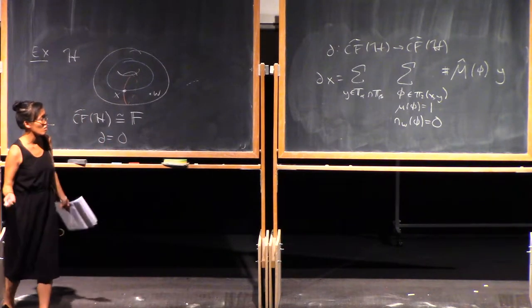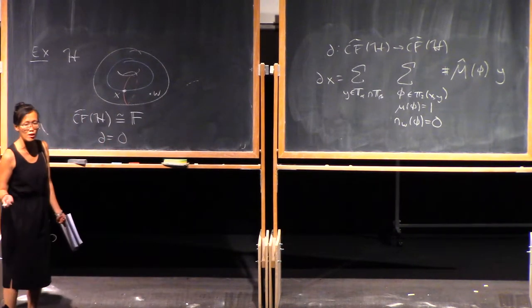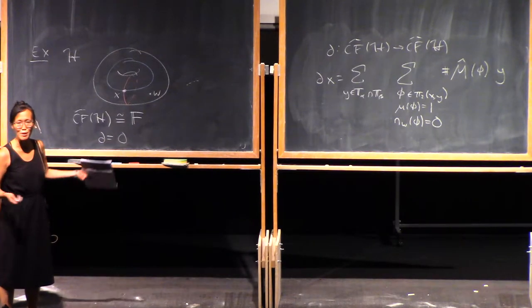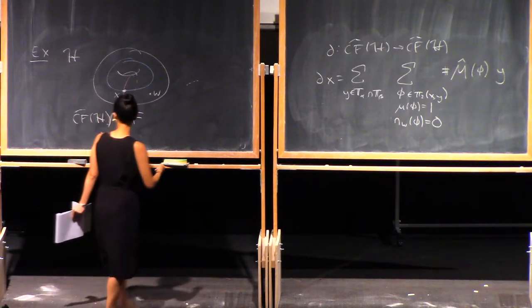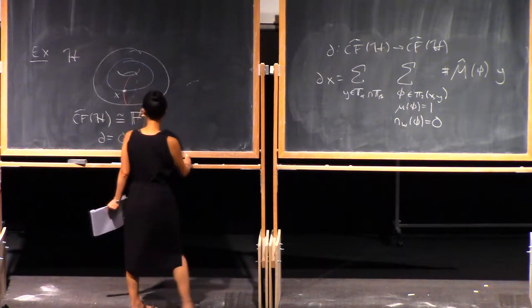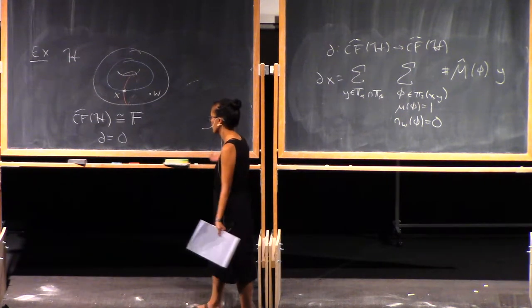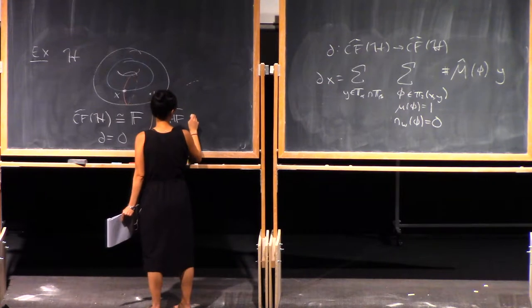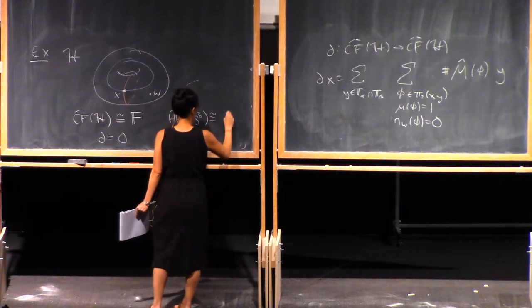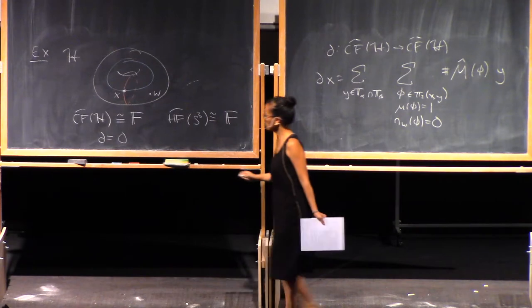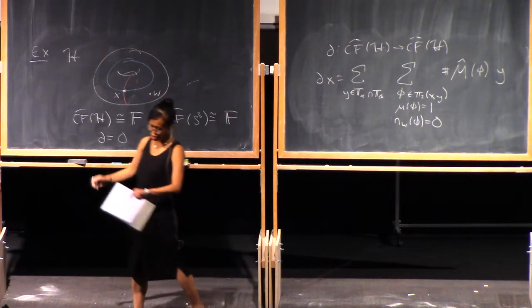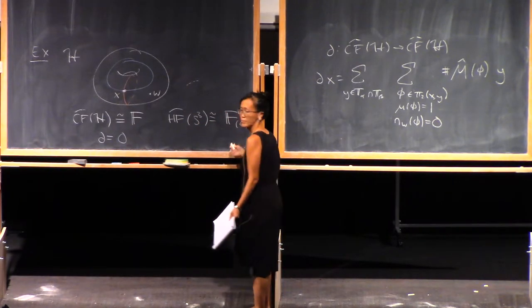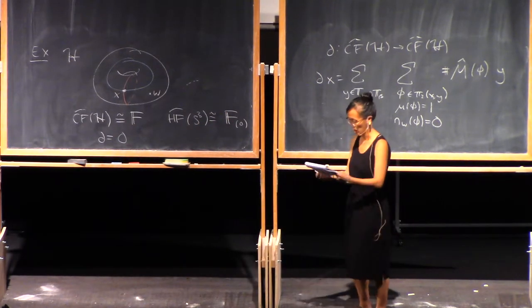The differential is zero. The easiest way to see that is that the differential lowers grading by one. We only have a single generator — it lives in some grading, so it can't appear in its own differential. So the differential is zero and the homology is just isomorphic to F. With our normalization, this is in grading zero. So that's the Heegaard Floer homology of S³.